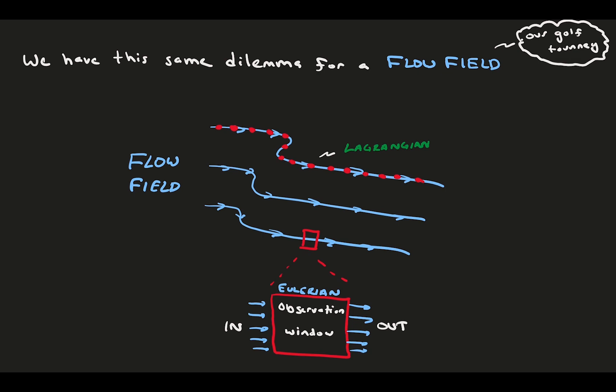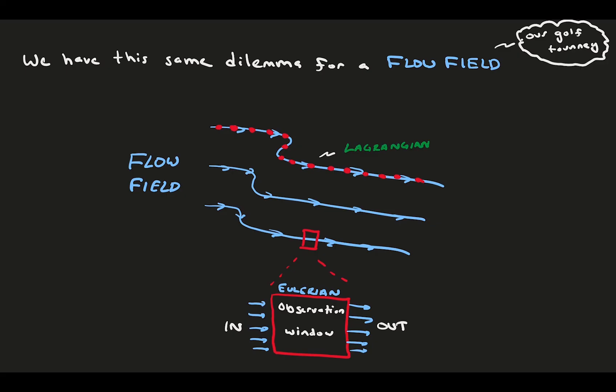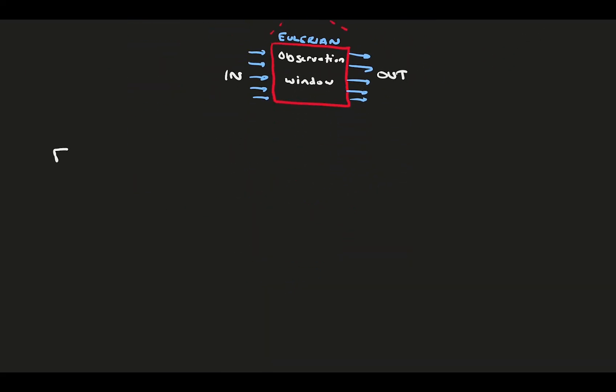For example, at our spot, maybe fluid tends to slow down or maybe it starts to spin. Both of these are legitimate viewpoints with uses in fluid mechanics. However, typically in learning fluids, we take the Eulerian approach and we fix our observation window.